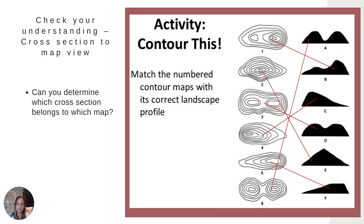Number four matches with C — an isolated hill off to the left. Number five is similar but has a much more flat top; the last contour line doesn't have another little one to suggest a peak, whereas number four does. So five matches with F because you can see the flat top to the right of the map. And six is A, showing two isolated hills with a lot of contour lines from the baseline in the middle, suggesting steeper hills on either side.